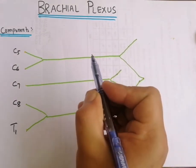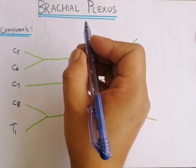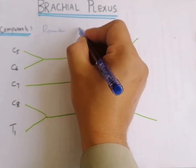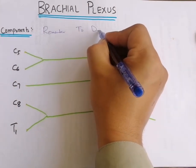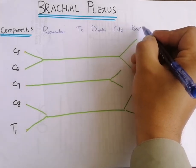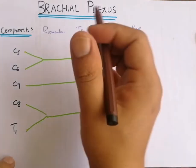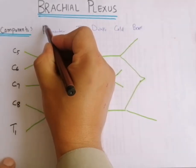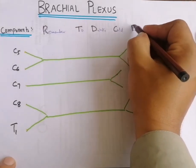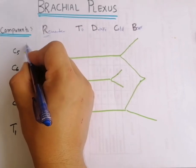To label the brachial plexus, first remember the mnemonic: 'Remember To Drink Cold Beer.' This is the mnemonic for the components of the brachial plexus, where the first letter of each word corresponds to a component. R is for Roots.